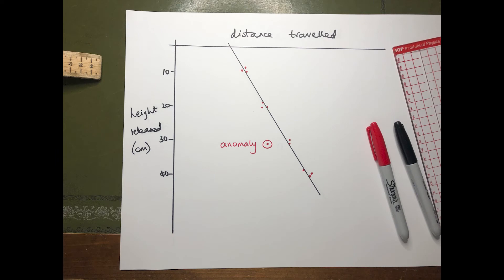You could use this activity to teach a number of concepts relating to graphs: dependent and independent variables, what we're controlling, how we choose and space systematically the horizontal axis values — in this case the release height. You can repeat each measurement and then look at how the results cluster, spotting any anomalies along the way. There will be a decision needed over how to draw the best-fit line and you can look at where that line cuts the vertical axis and what that means. Why doesn't it go through the origin? You can think about friction and the transfers between energy stores.